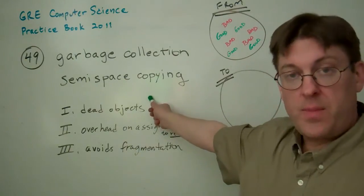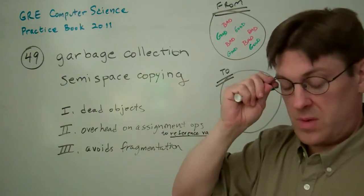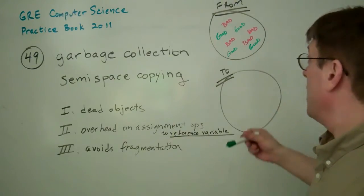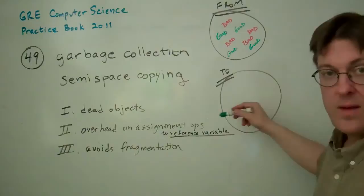Semi-space copying is one of the easiest ways of doing garbage collection. If you've studied it, you probably already know this. But you basically have a from space and a to space.